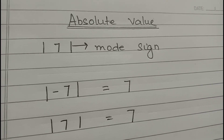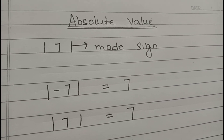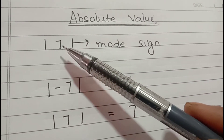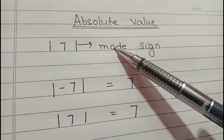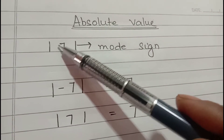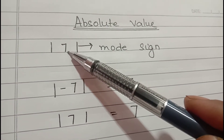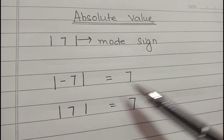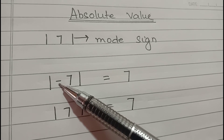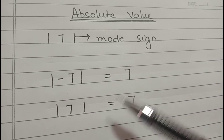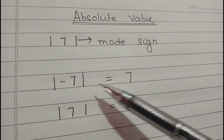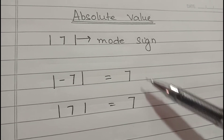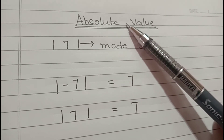We will see absolute value in integers. What is absolute value in integers? Whenever your integer is in mod sign — these two lines are known as mod sign — we overlook the sign of the integer. That means here, minus seven will become seven, and seven will become seven. Whether it is a negative integer or positive integer, the sign you will omit.